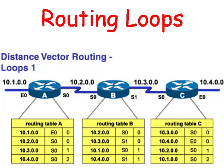Normally routing loops are associated with distance vector protocols. The reason for this is that none of the routers have a complete topology of the network. They only know the very next address that they need to send a packet to, but not where the packet goes after that.